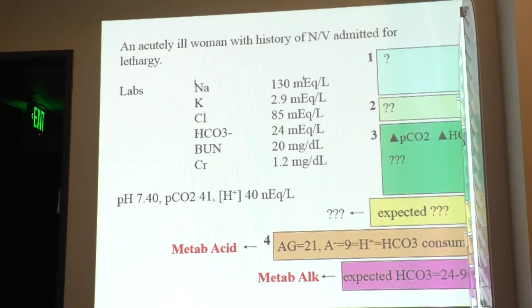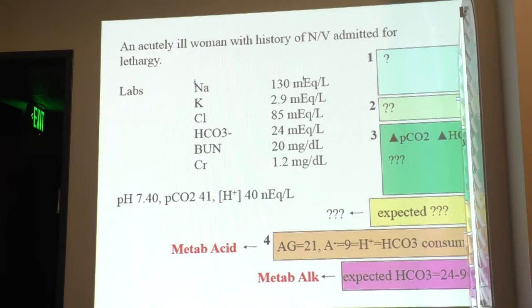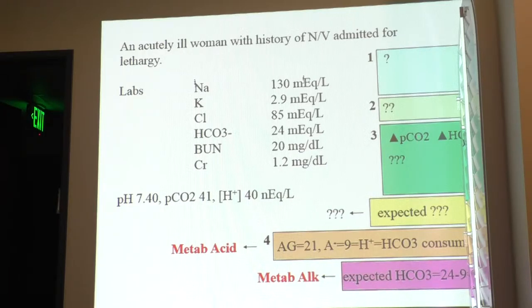In this case, to avoid sending that person home, I would not have done the pH first — I would have calculated the anion gap. If I ordered a Chem 7, looked at the gap, and saw this lady has a huge gap, at that point I would have done a blood gas. The teaching point is: always calculate the gap.